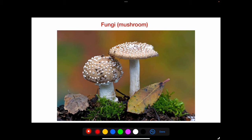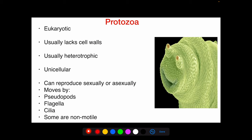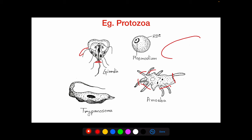Protozoa are eukaryotic and have true cells but lack a cell wall. They are usually heterotrophic, making them parasitic — they depend on other microorganisms for food. They are unicellular and can reproduce sexually or asexually. They move by pseudopods, flagella, or cilia, and some are non-motile. Examples include Giardia, Plasmodium, Amoeba, and Trypanosoma.